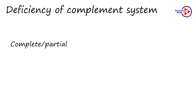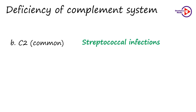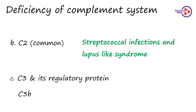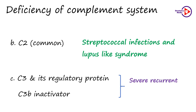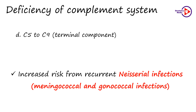Complement deficiency results in the host being unable to eliminate microbial antigens or circulating immune complexes, making persons more susceptible to recurrent bacterial, fungal, and collagen diseases. The deficiency can be either complete or partial. Deficiency of early components of the classical pathway, that is C1, C2 and C4, predisposes the person to conditions such as systemic lupus erythematosus or other collagen diseases. Deficiency of C2, the most common complement deficiency, is associated with streptococcal infection and lupus-like syndrome. Deficiency of the central component C3, and its regulatory protein C3B inactivator, predisposes persons to severe recurrent pyogenic infections. Deficiency of terminal complement components C5 to C9 puts persons at increased risk of recurrent Neisserial infections such as invasive meningococcal and disseminated gonococcal infections.